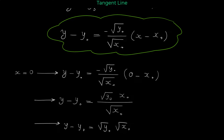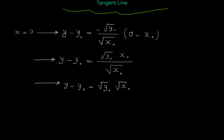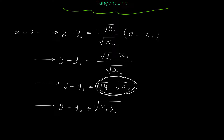Moving negative y₀ to the right, the y-intercept equals y₀ plus square root of x₀ times y₀. We can combine the two separate radicals into one single radical, writing the y-intercept as y₀ plus square root of x₀y₀.